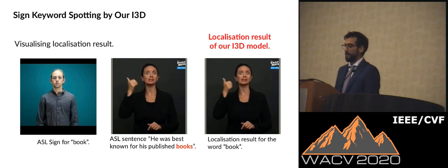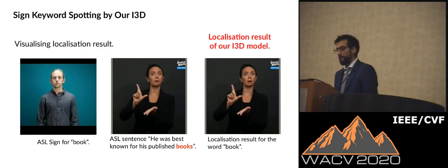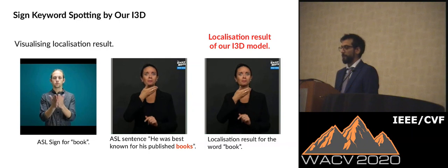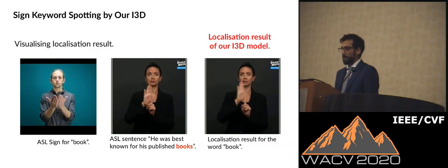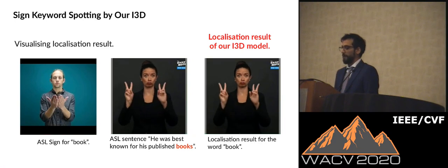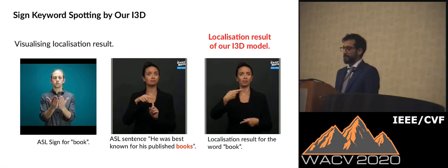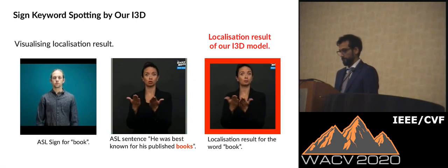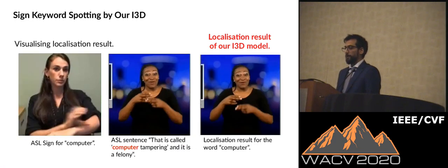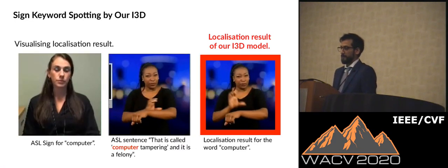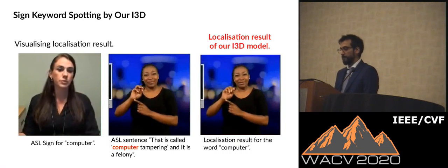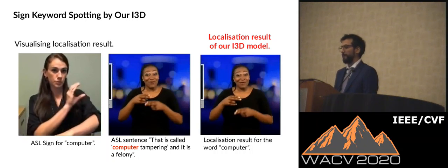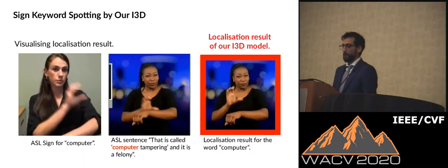On the left is a demonstration of the word-level sign video from our dataset. In this example, it shows the sign for 'Google'. In the middle, we have a video of a sentence in sign language which translates to 'He was less known for his published books'. On the right, we show the localization results for the word 'books', where the localized segment is highlighted with a red bounding box. Here we show another example of the localization results for the word 'computer', where the segment containing the word is identified and the localization result is shown on the right.